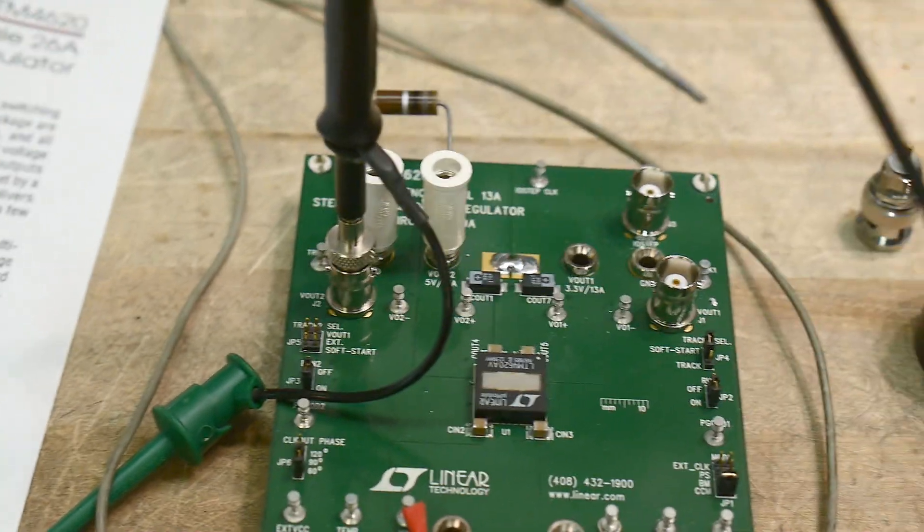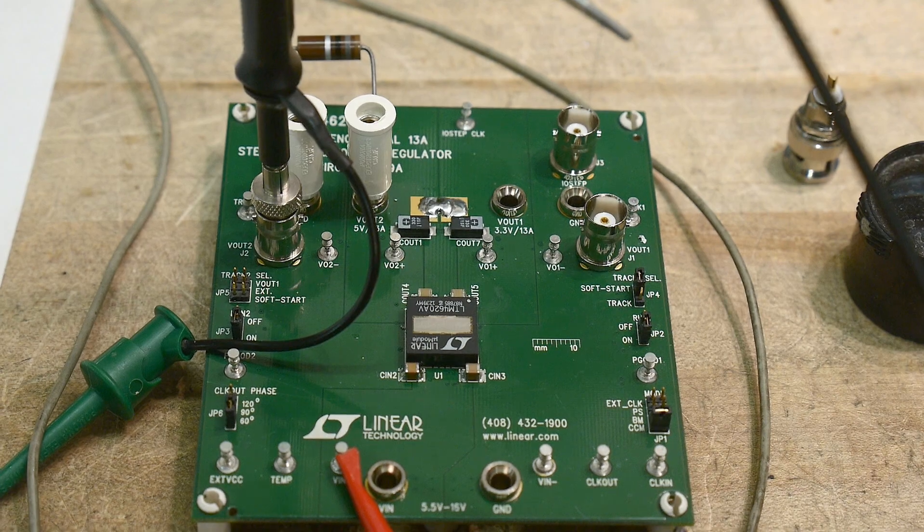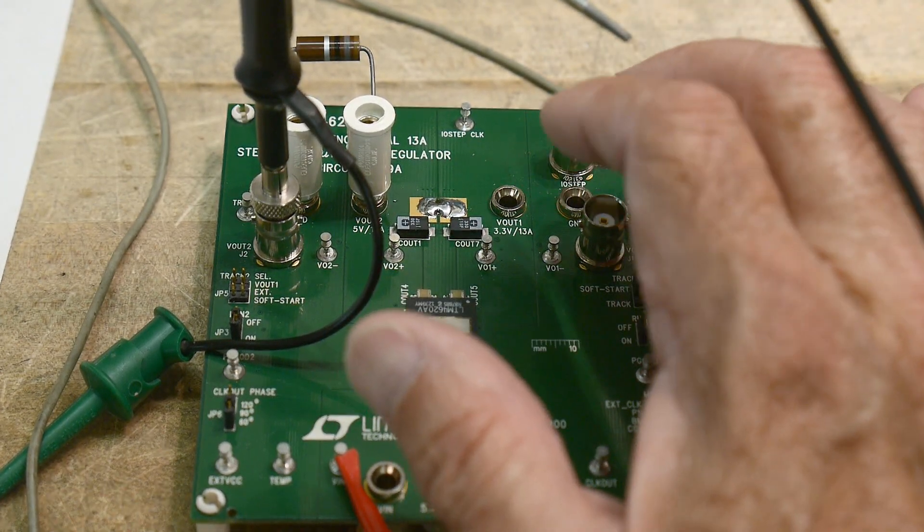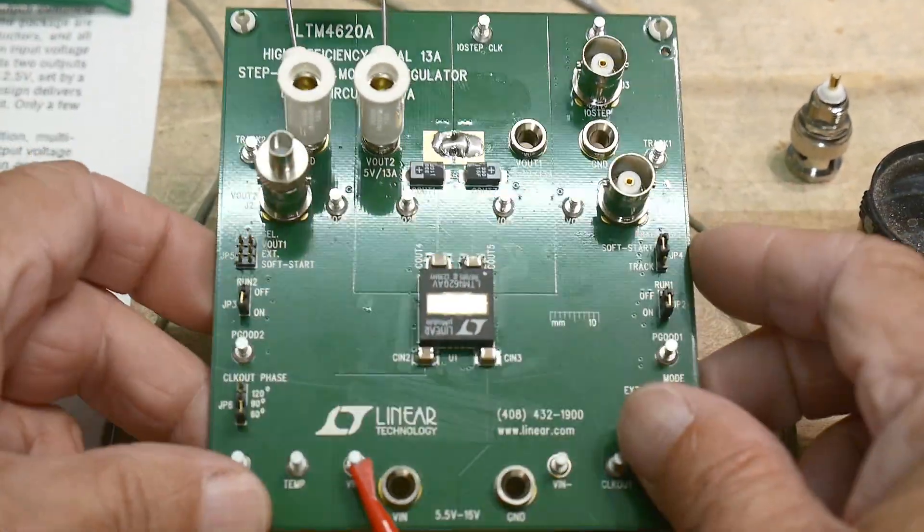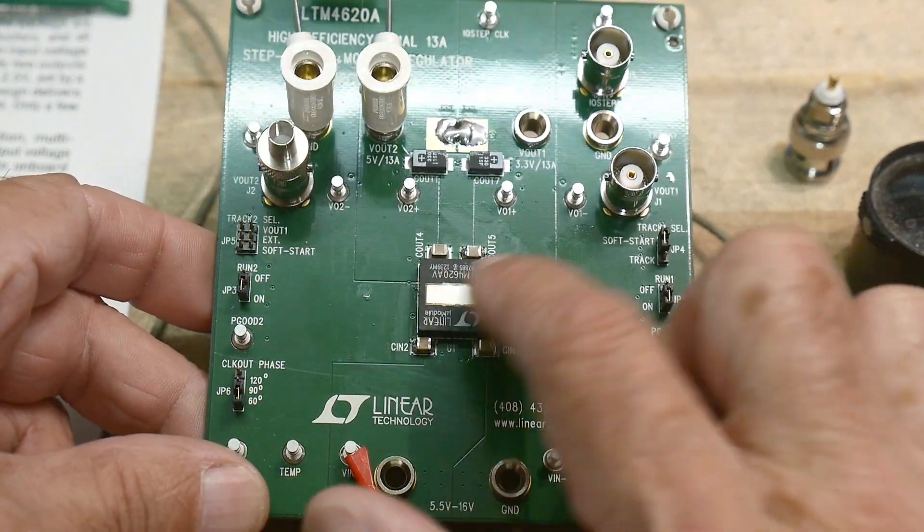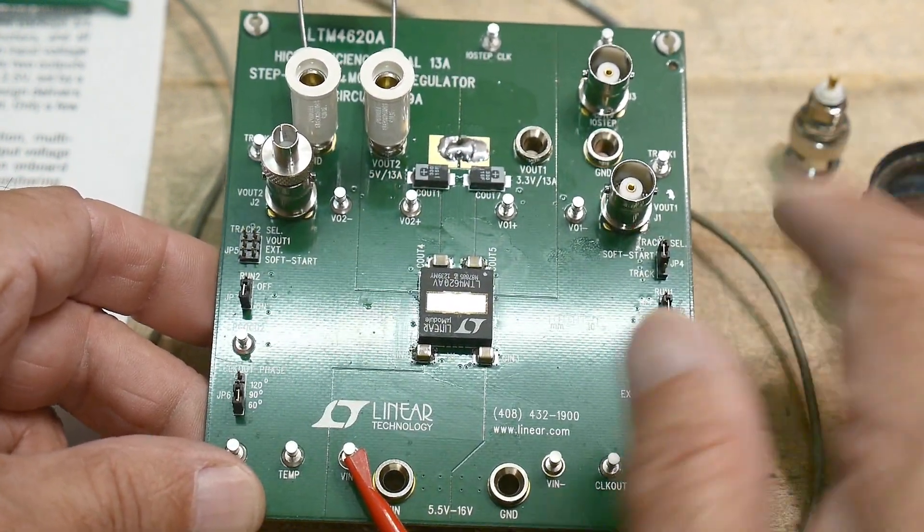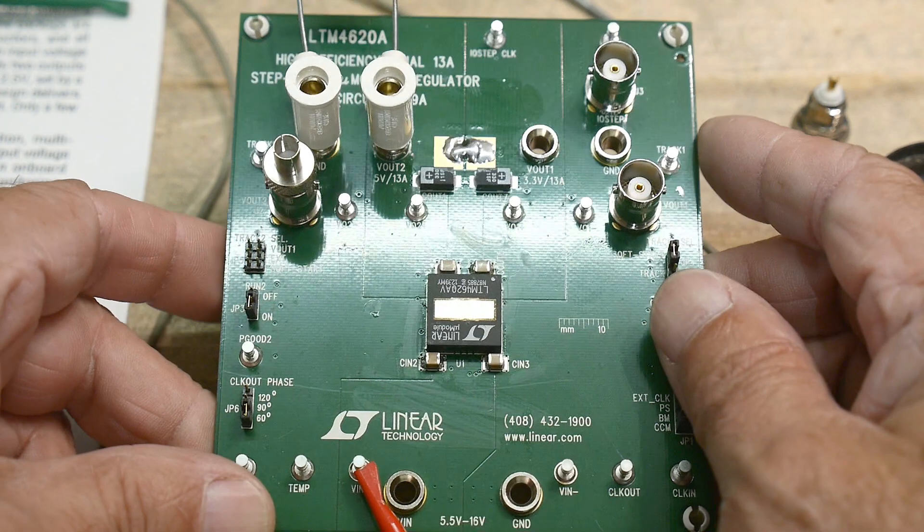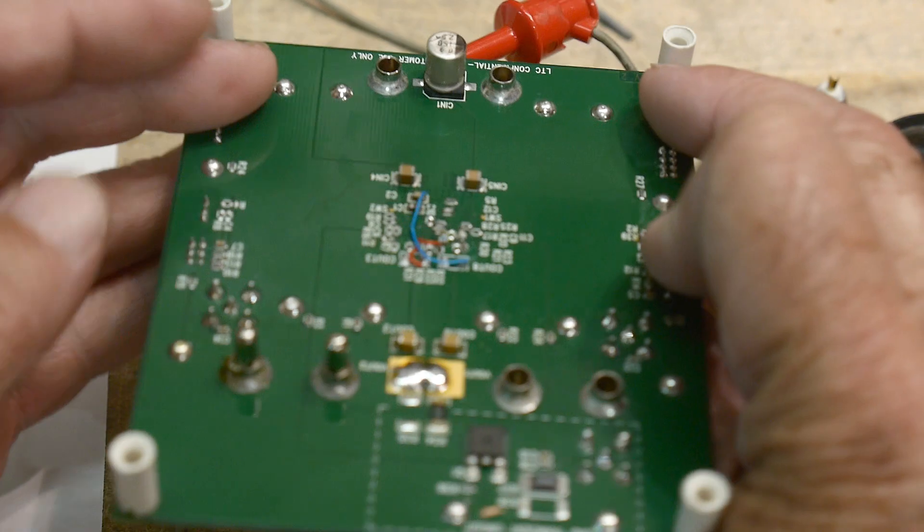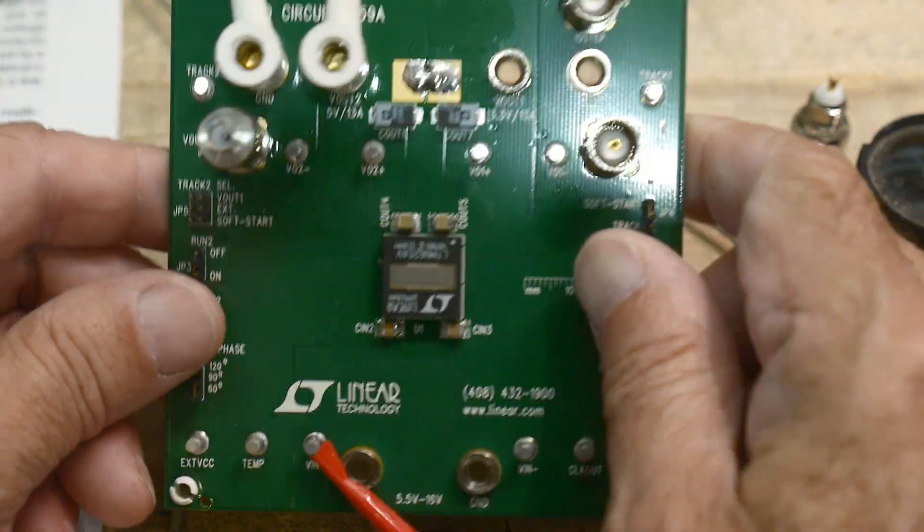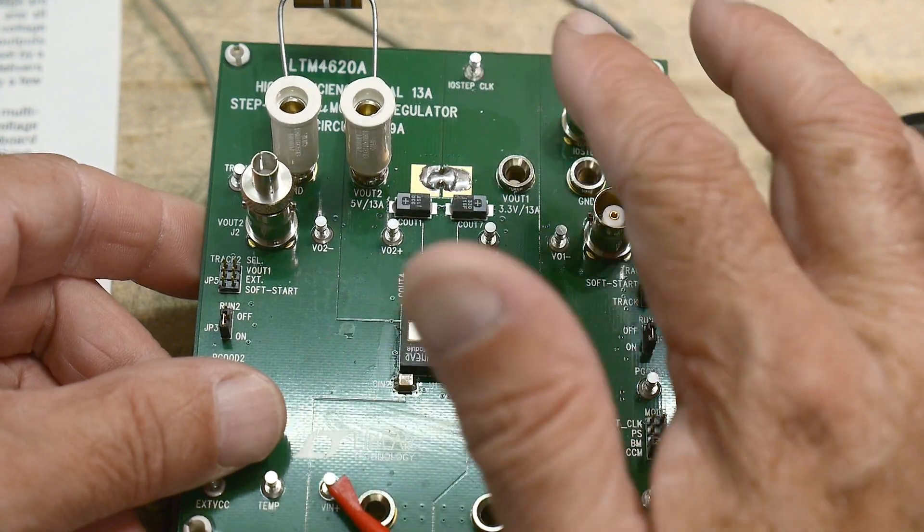So I have the evaluation board that Linear Technologies sells. And it is set up. Let me see here. Let me take off my scope probe for a second. This is the big chip here. It's a really interesting part with some copper sticking out. I guess you can put a heat sink on it. Probably need to. But there's an area here where you can jumper it. And so this one's been jumpered. So it's going to operate in the 26 amp mode. Single voltage out 26 amps.